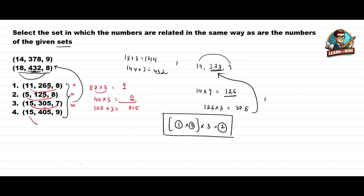Now the fourth option: 9 times 5 is 45 — wait, checking again: the product is 135, and 135 times 3 is 405, which is the second number. So this is our answer.